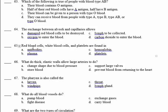Number 65: red blood cells, white blood cells, and platelets are all found in the plasma. The plasma is a clear yellow fluid in which all the blood components are floating. Number 66.